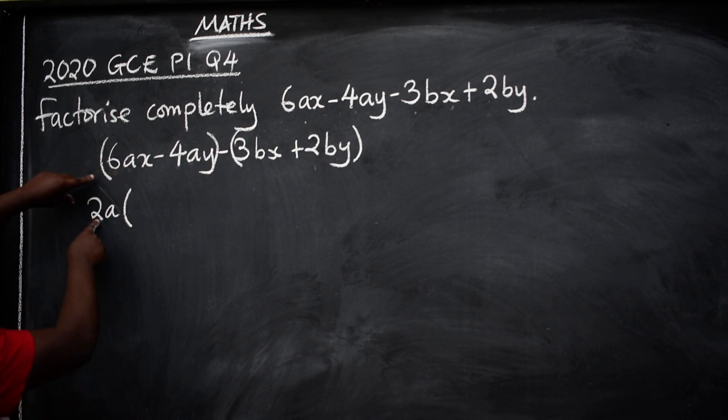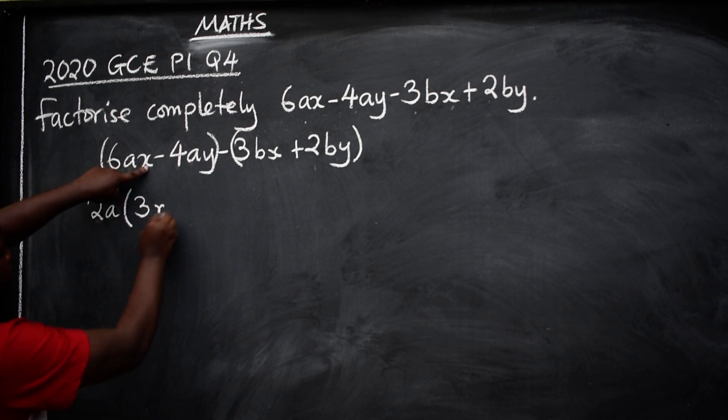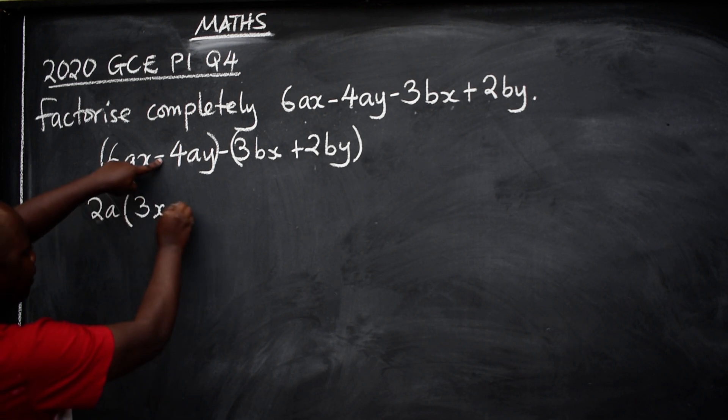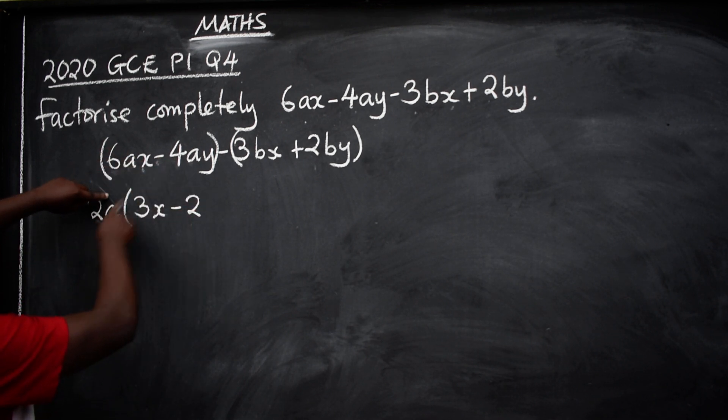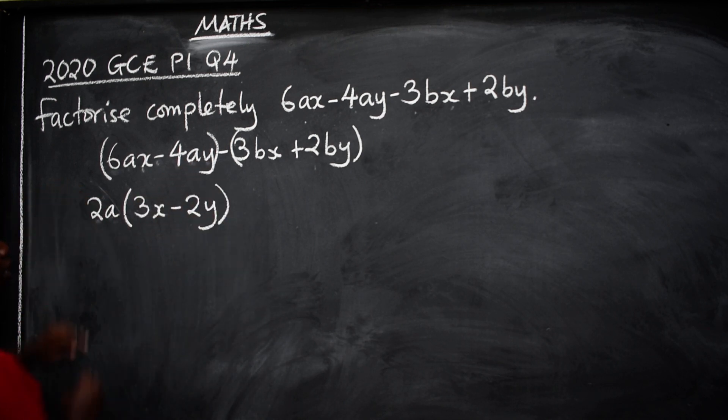Then 2 into 6, it will be 3. And then this A will just be able to remain with X. Minus. 2 into 4, it will be 2. The A is already here. So I will remain with the Y. Have you seen?